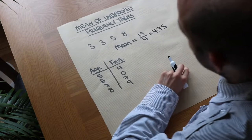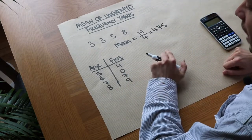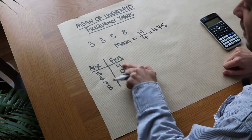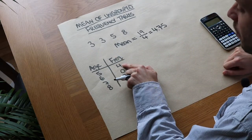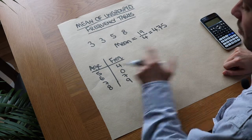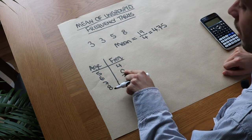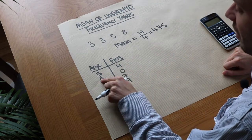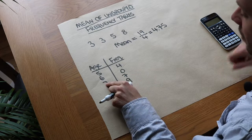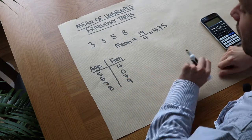Now let's say instead we had a frequency table, and this frequency tells us how many people of each age we have. So we've got four people at age 5, zero 6-year-olds, seven 7-year-olds, and nine 8-year-olds.